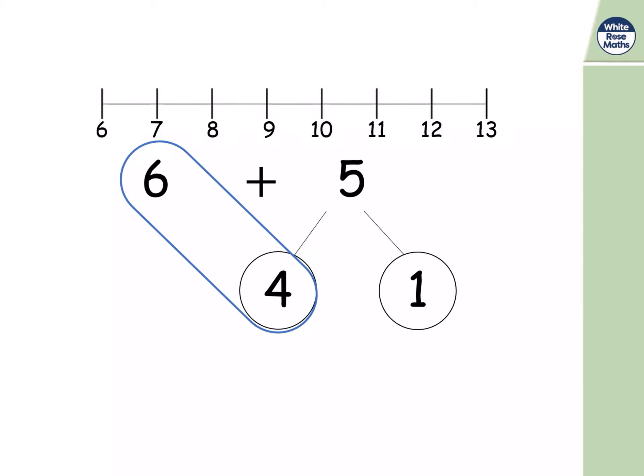I can show this on a number line. I'm starting at six and I'm jumping to the next ten. And that's a jump of four. Ten. Six plus four makes ten. And then what have I got left over? I've got a jump of one. So ten plus one is equal to eleven. And that's the same as six plus five is equal to eleven. All I've done is partition the five into four and one to make ten first, and then add the one on afterwards. It's all about jumping to the next ten.